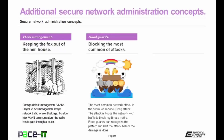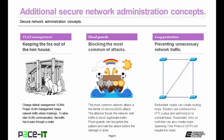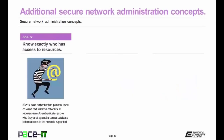Then there are flood guards — blocking the most common of attacks. The most common network attack is still the denial of service, or DoS, attack, in which the attacker tries to flood the network with traffic to block legitimate traffic. Flood guards can recognize the pattern and halt the attack before damage is done. Then there's loop protection — preventing unnecessary network traffic. Redundant routes can create routing loops; routers use a time-to-live value and split horizon to combat them. Redundant links on switches can also create loops, and spanning tree protocol, or STP, will negate these loops from ever occurring.